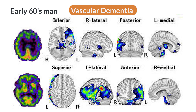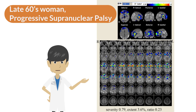Vascular dementia shows asymmetric hypoperfusion, which should be contrasted with vascular lesions on MRI and CT. In progressive supranuclear palsy, hypoperfusion is seen in the frontal lobe, anterior cingulate gyrus, and anterior part of the basal ganglia.